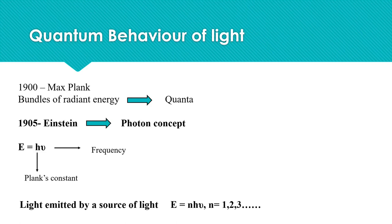From this equation, we can see that higher the frequency of photon, the higher the energy. The light energy emitted by a source must be an integral multiple of photon energy. Therefore, E = nhν where n = 1, 2, 3, etc.